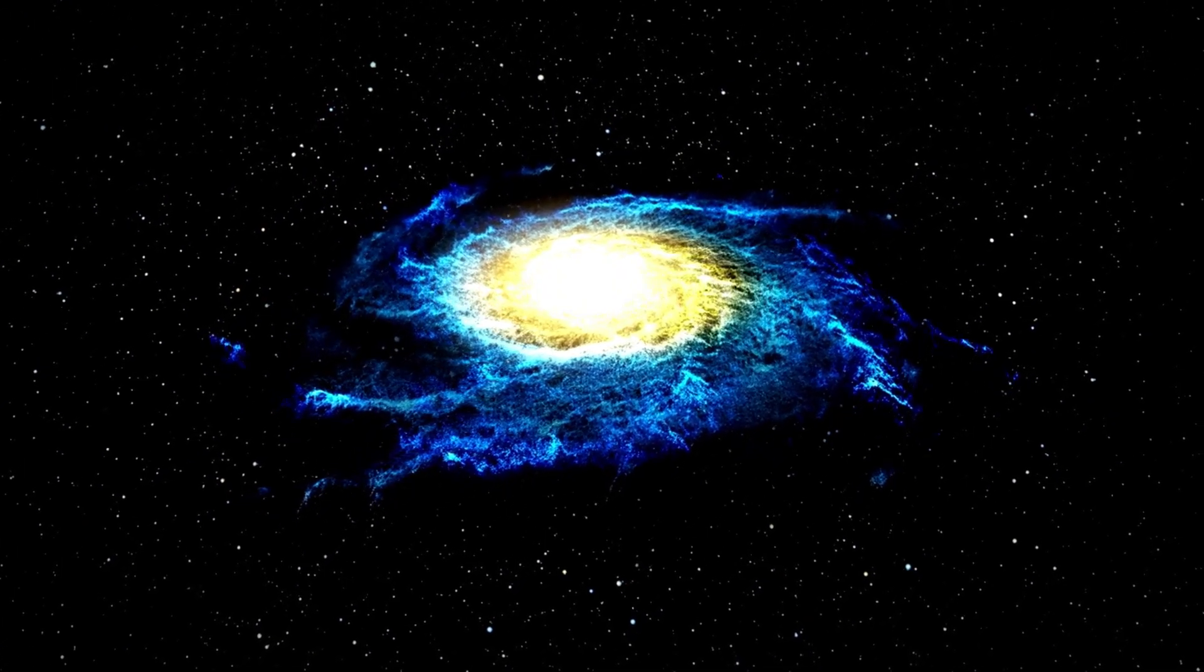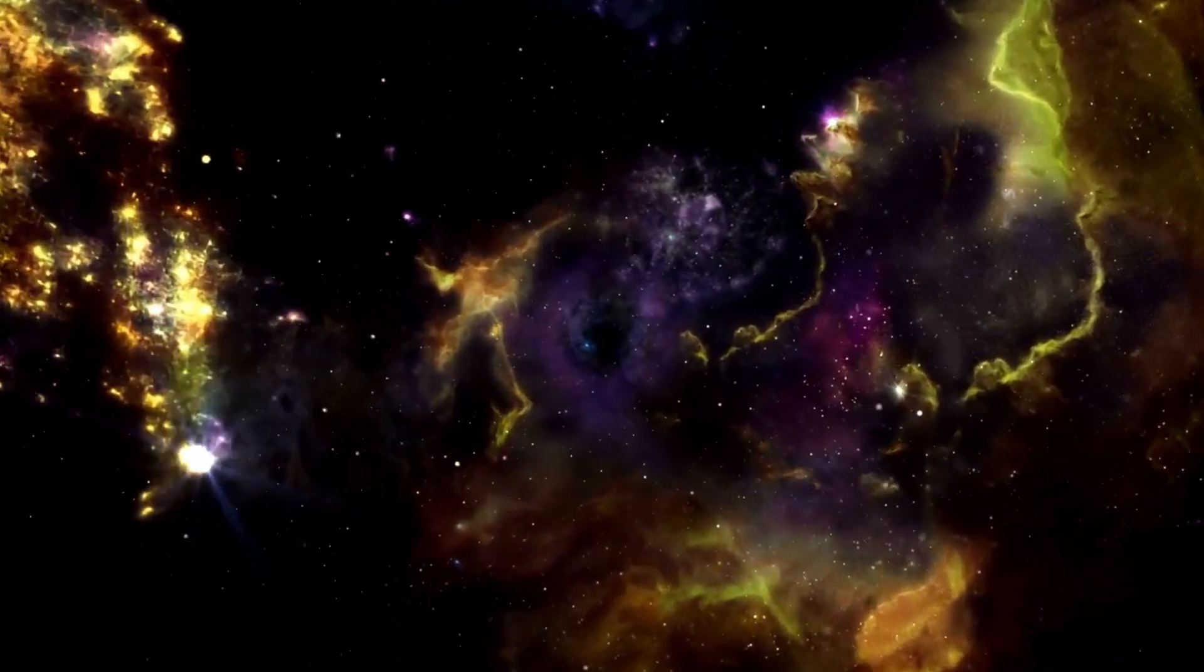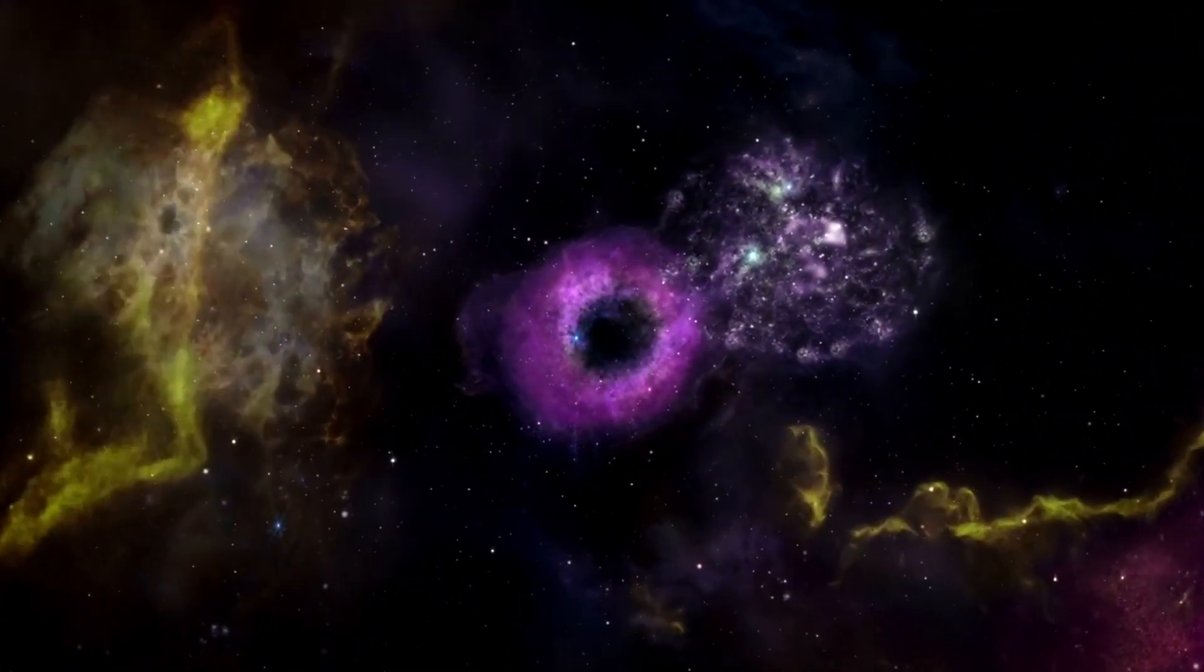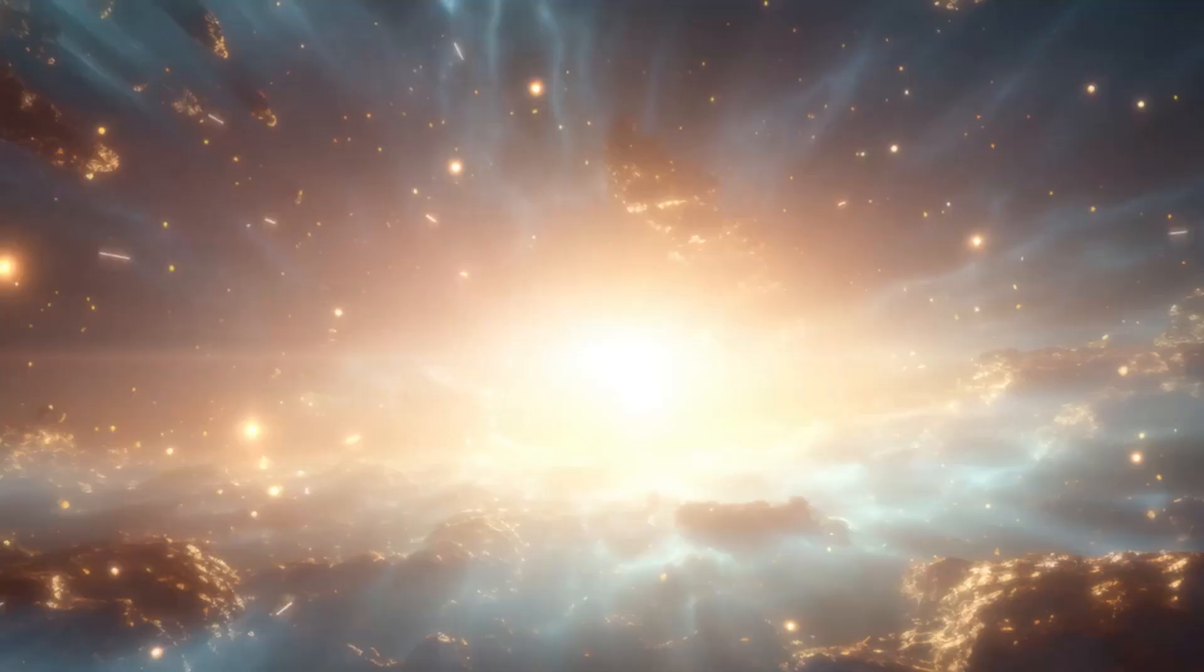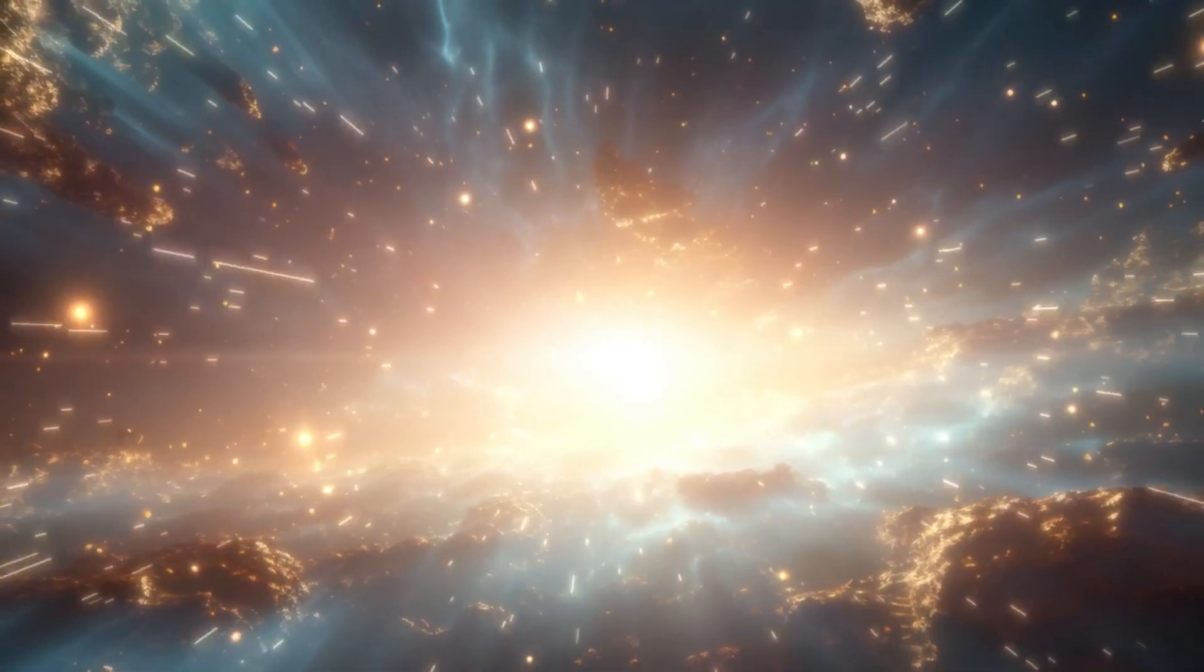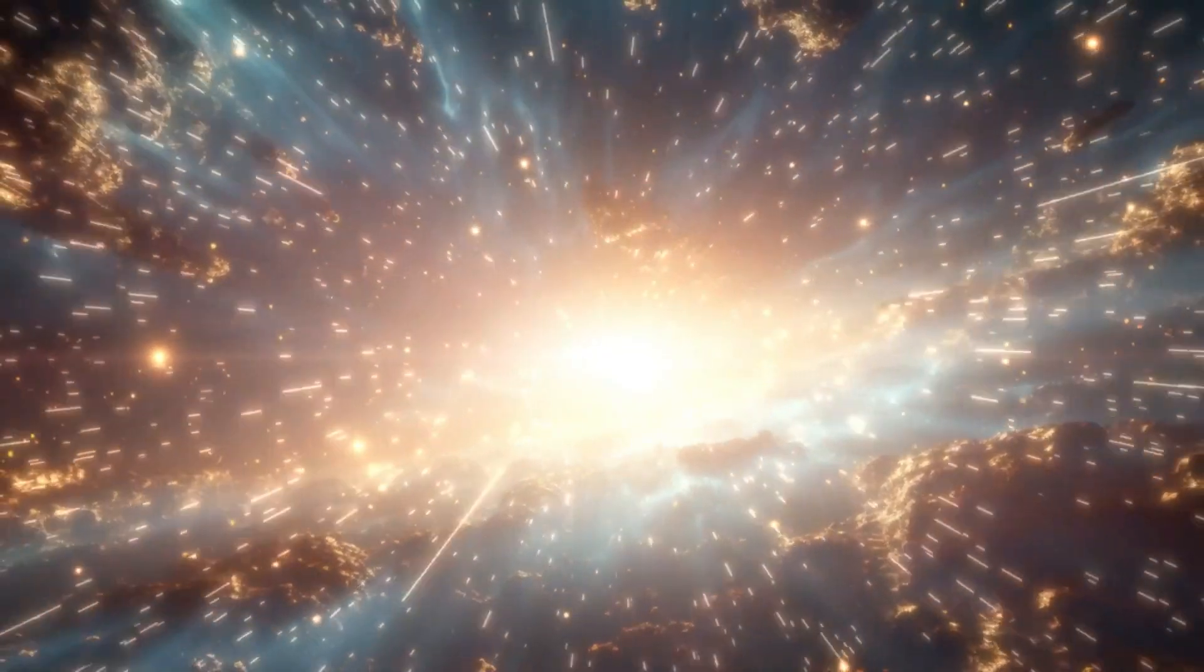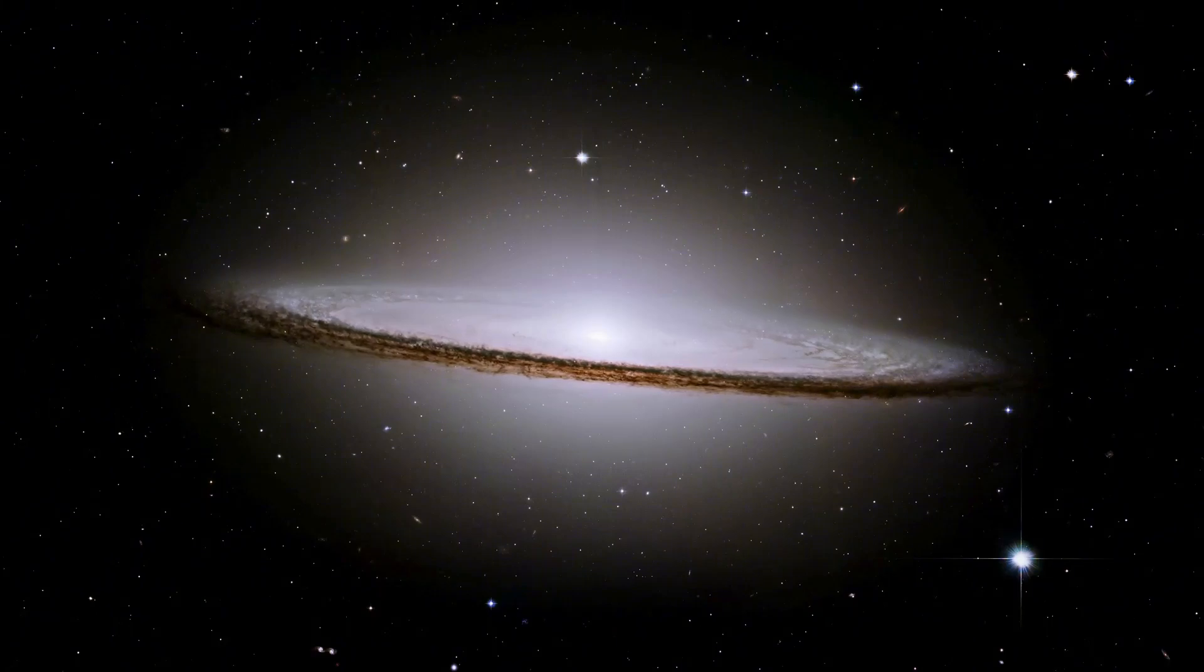This process will not result in a supernova but will instead lead to a more peaceful end as Polaris evolves into a small, extremely dense stellar remnant. A white dwarf is the dense core of a low to medium mass star that has exhausted its nuclear fuel. It is incredibly compact, roughly the size of Earth, but as massive as the Sun. Once this happens, we will no longer observe Polaris as we see it today.